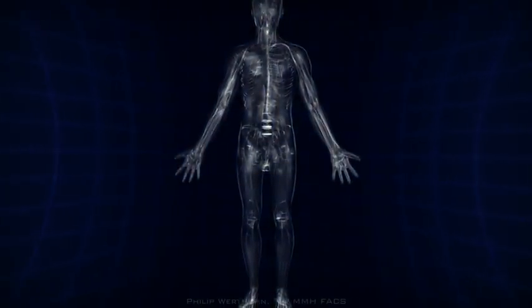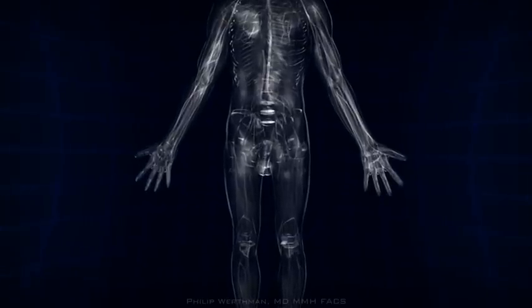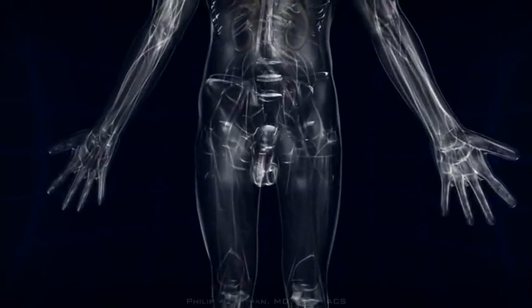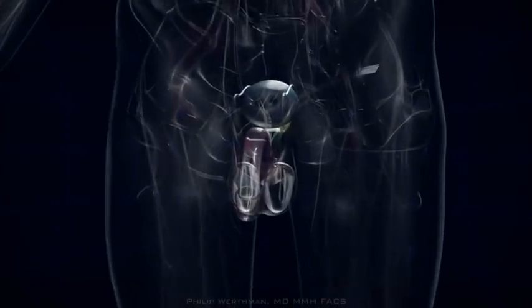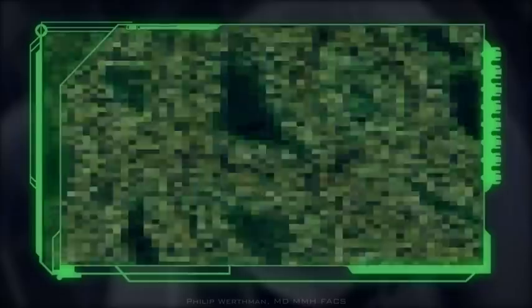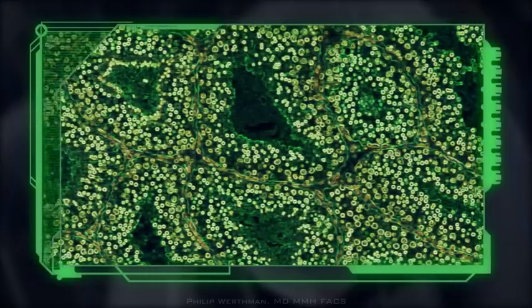The best way to find sperm when there is a production problem is called Microsurgical Testicular Sperm Extraction. Because sperm are not produced in all areas of the testicle, magnifying the seminiferous tubules using a powerful operating microscope allows the surgeon a better chance of finding sperm.